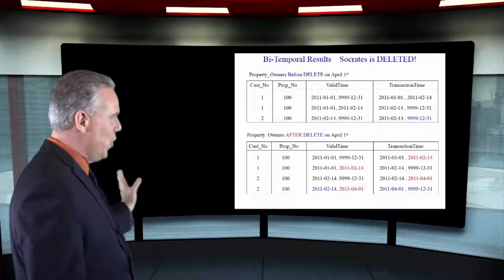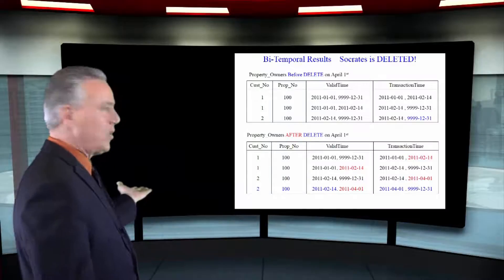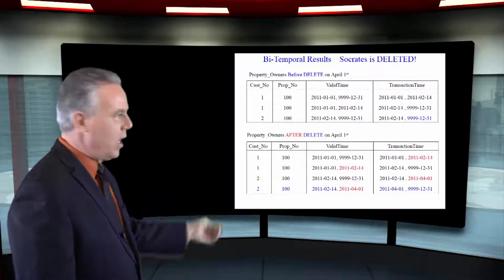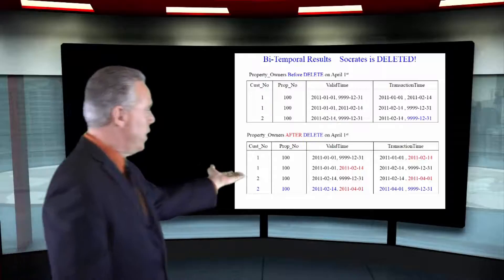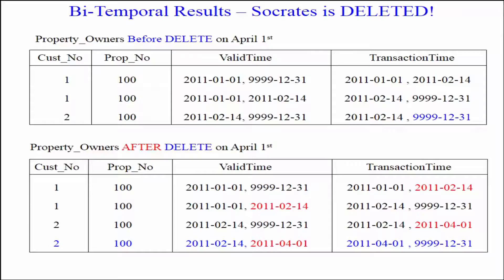A new row was inserted that said yes, it's customer two, property 100 — owned this from February 14th until April 1st. And the transaction time is going to say this happened on April 1st and 9999-12-31.